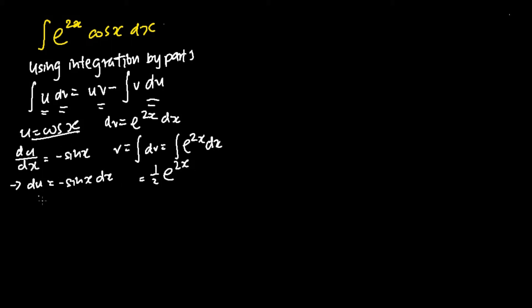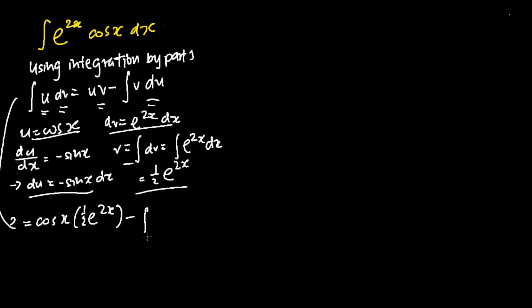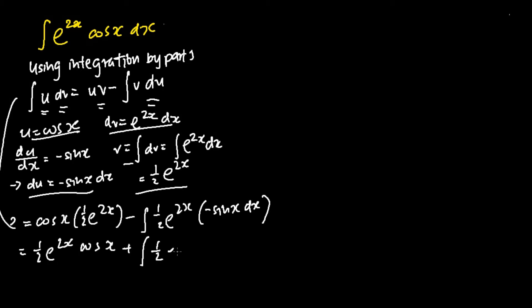Now I have my u, my du, my dv, and my v. I can use the integration by parts formula to proceed to the next step and get the following solution. My u is cosine x, my v is half e to the power of 2x, and my du is negative sine x dx. After simplifying, we next perform the integration by parts again on the integral of half e to the power of 2x sine x dx.